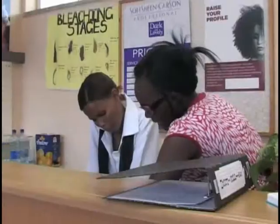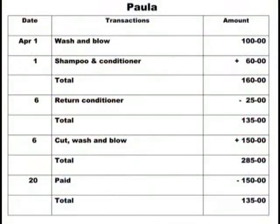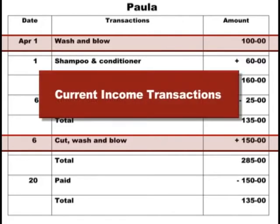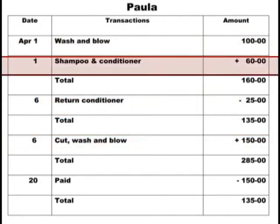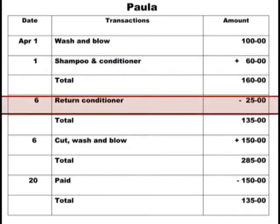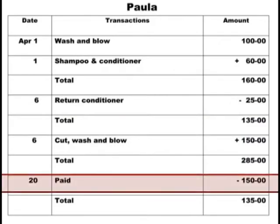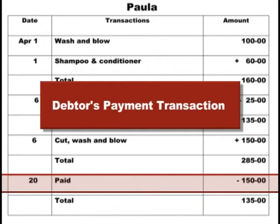The debtors ledger is where you open the individual debtors account — like your customer card. In the debtors control account, it's the summary of all the debtors transactions. Let's look at the different debtors transactions using the customer card as a starting point. You have all the transactions for April here. On the 1st and 6th, you rendered services like cut, wash and blow — this is called a current income transaction. Also on the 1st, you sold shampoo and conditioner — we call it a sales transaction. Then the conditioner was returned on the 6th — when a customer returns goods, we call it a sales return transaction. On the 20th, part of the account was paid — when customers pay their account, it is called a debtors payment transaction.